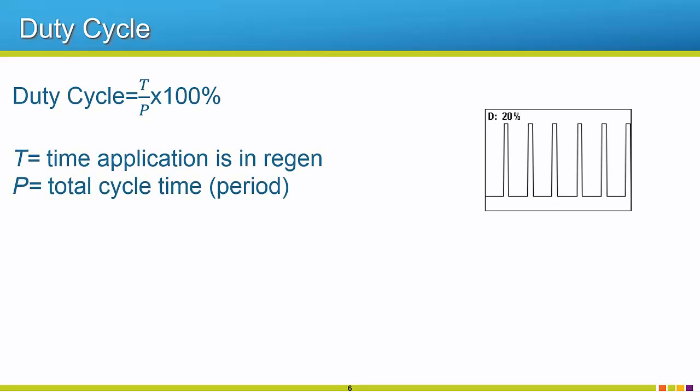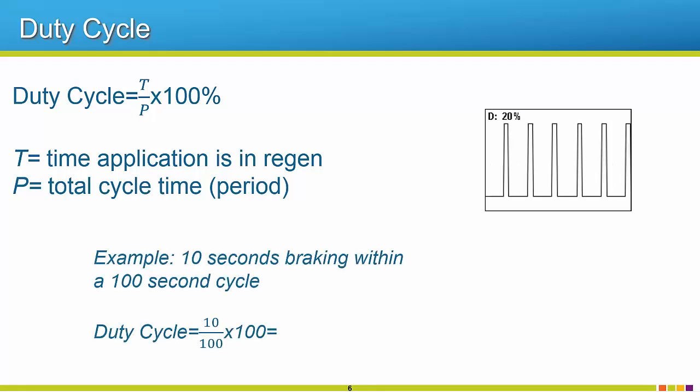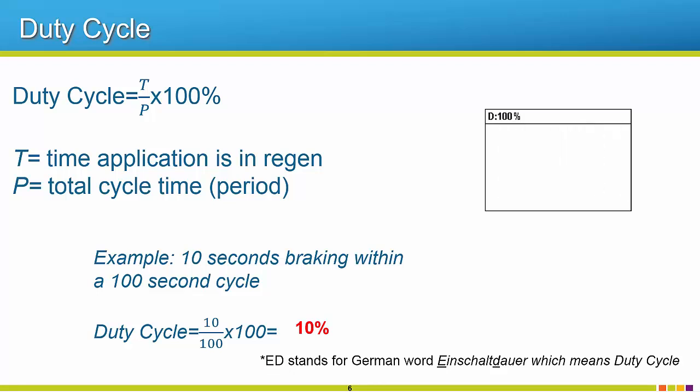Before reviewing the available options for controlling regenerative energy, it is important to understand the term duty cycle. Duty cycle is expressed as a percentage. So when we are talking about regen, this percentage reflects how much time out of one cycle an application is in regen. Knowing this, our example with the downhill conveyor may have 100% regen if the conveyor is fully loaded. This is considered continuous regen. The less time an application is in regen, the lower the duty cycle. This is key information to know when you are matching a regenerative option to a given application. One thing to note is that Yaskawa often lists ED instead of duty cycle when it comes to ratings of regenerative components. ED simply stands for Einschaltdauer, which is actually German for duty cycle.